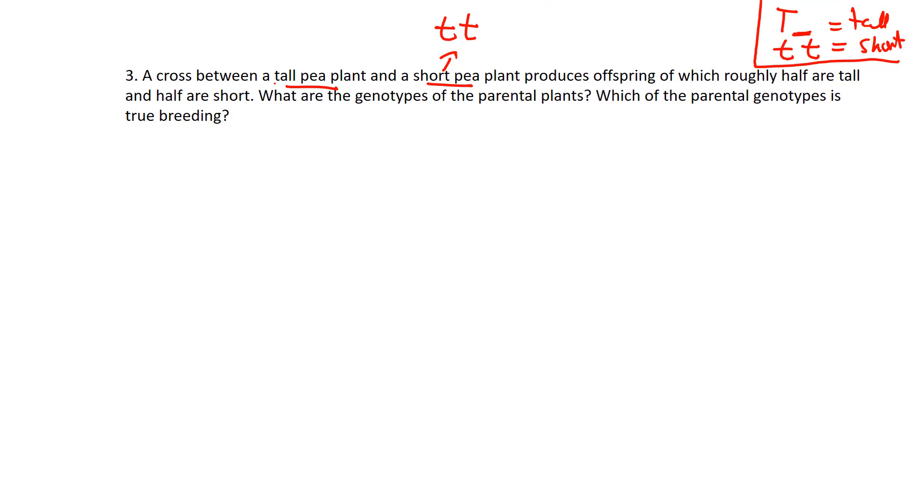A tall plant is capital T - take a look at our legend. If it's a tall plant, it's a capital T, but in this case it doesn't tell us if it's a homozygous tall plant, capital T capital T, or if it's a heterozygous tall pea plant, capital T little t. Because it doesn't, we don't know that genotype - that is an unknown.